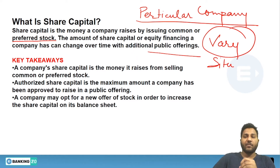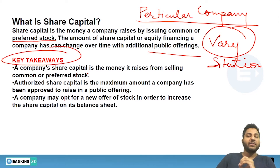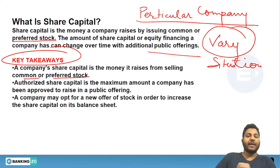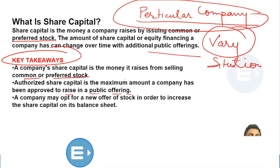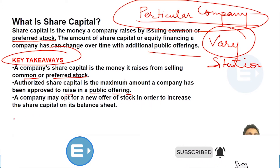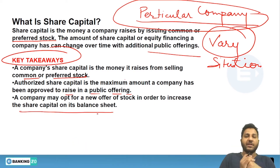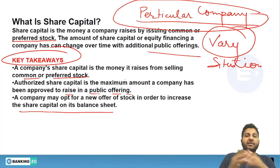Key takeaways of share capital: share capital is the money a company raises from selling common or preferred stocks. Authorized share capital is the maximum amount a company has been approved to raise in a public offering. A company may opt for a new offer of stock in order to increase the share capital on its balance sheet.